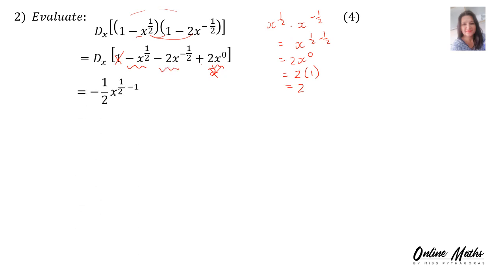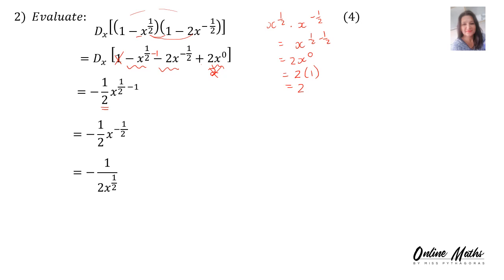We will zoom in on the non-constant terms. For the first term, when we find the derivative, the half goes to the front, becoming minus a half; go back to the exponent and subtract 1, so a half minus 1 is minus a half. That is the answer. If you want to write your answer with positive exponents, take x to the minus half to the denominator and it becomes minus a half over x to the half, or equivalently minus a half over root x.